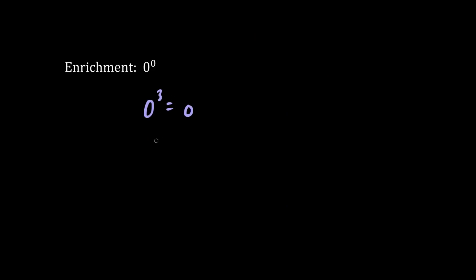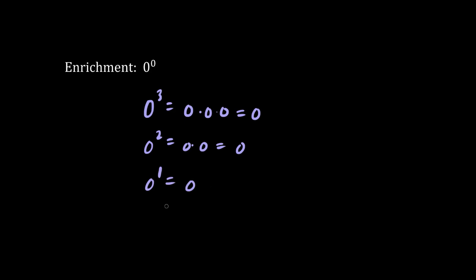When the base is 0, we write down 0. 0 cubed is 0, because we have 0 times 0 times 0, which is just 0. When we have 0 squared, we have 0 times 0, which is also 0. And 0 to the 1 is 0. In general, when the base is 0, we have the answer 0.